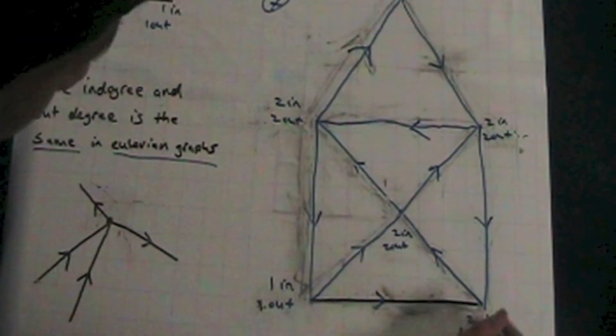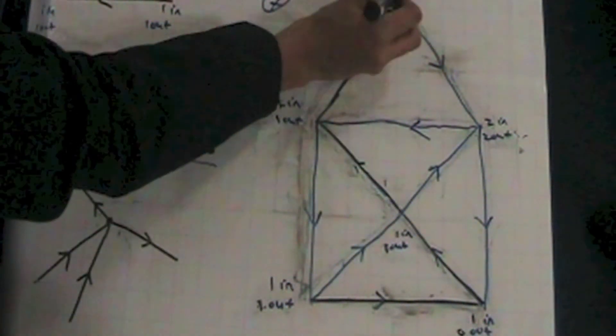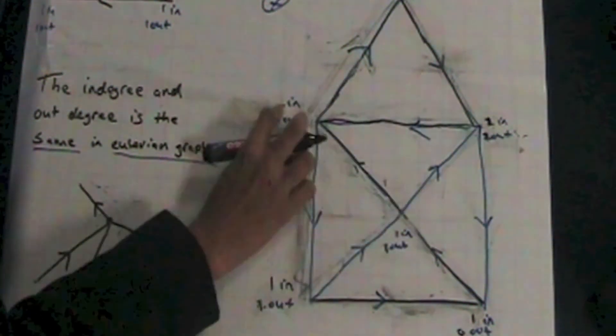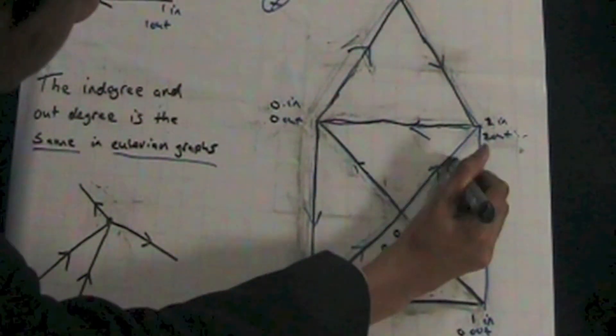Except for the first vertex you start off with, every other vertex in the middle of the trail will have the same number of in-degree paths as out-degree paths because every time you go into a vertex, you have to come out.